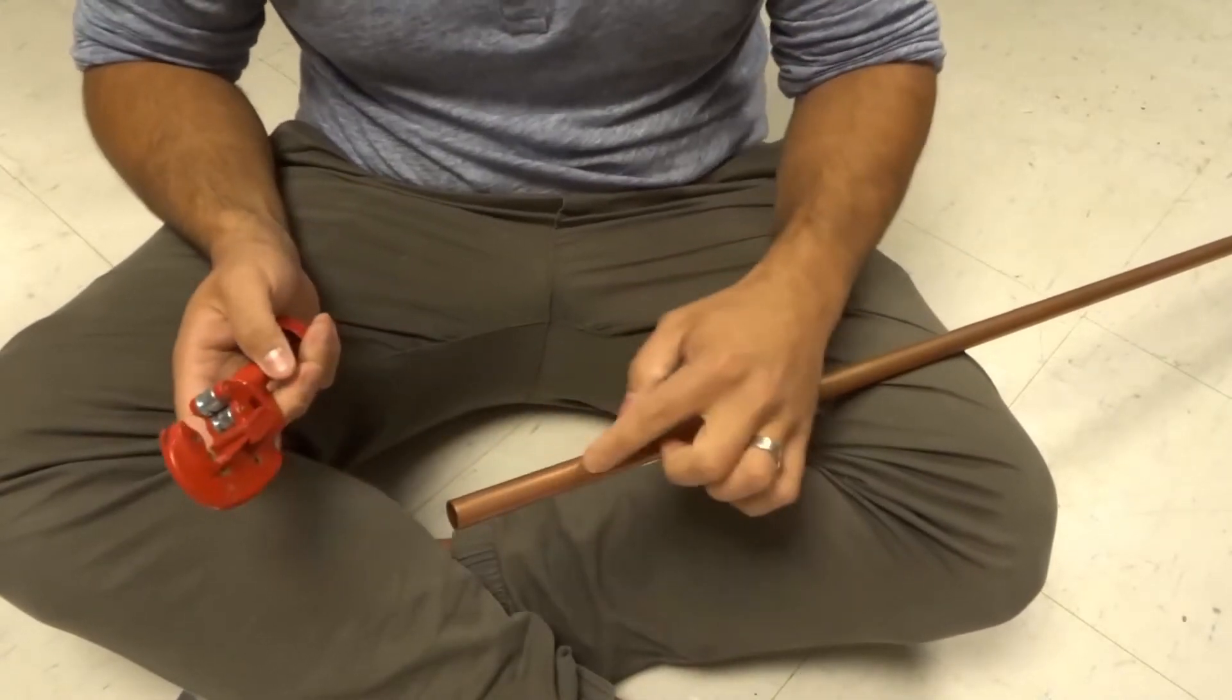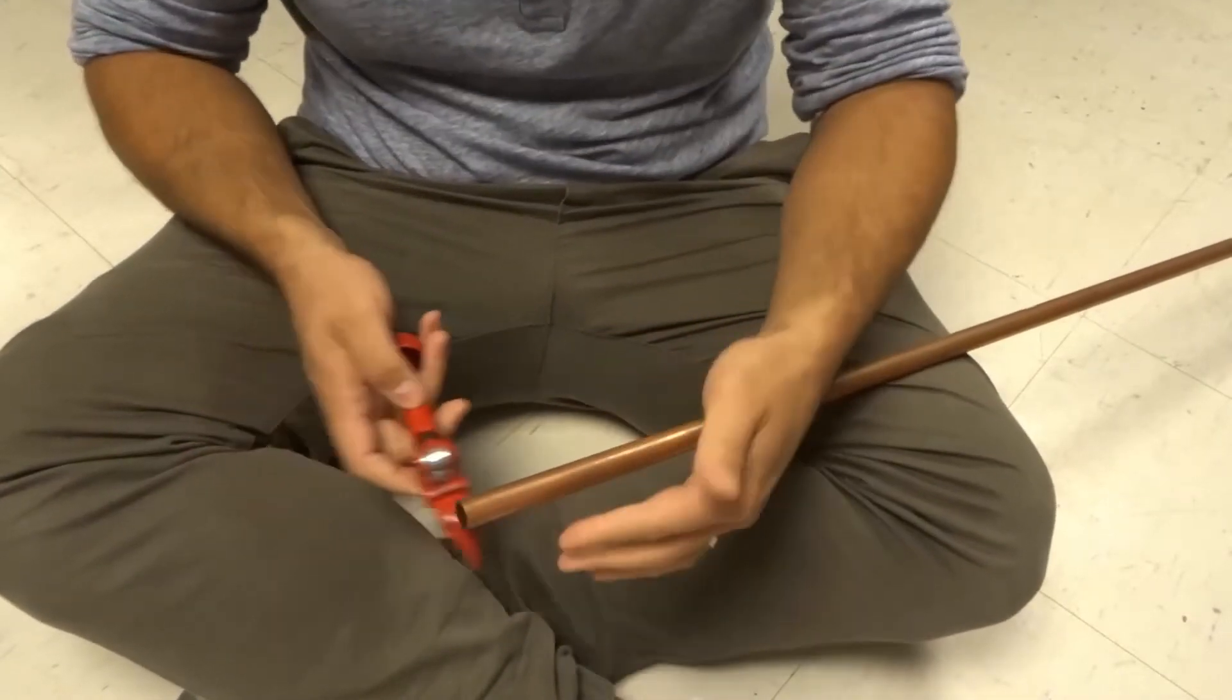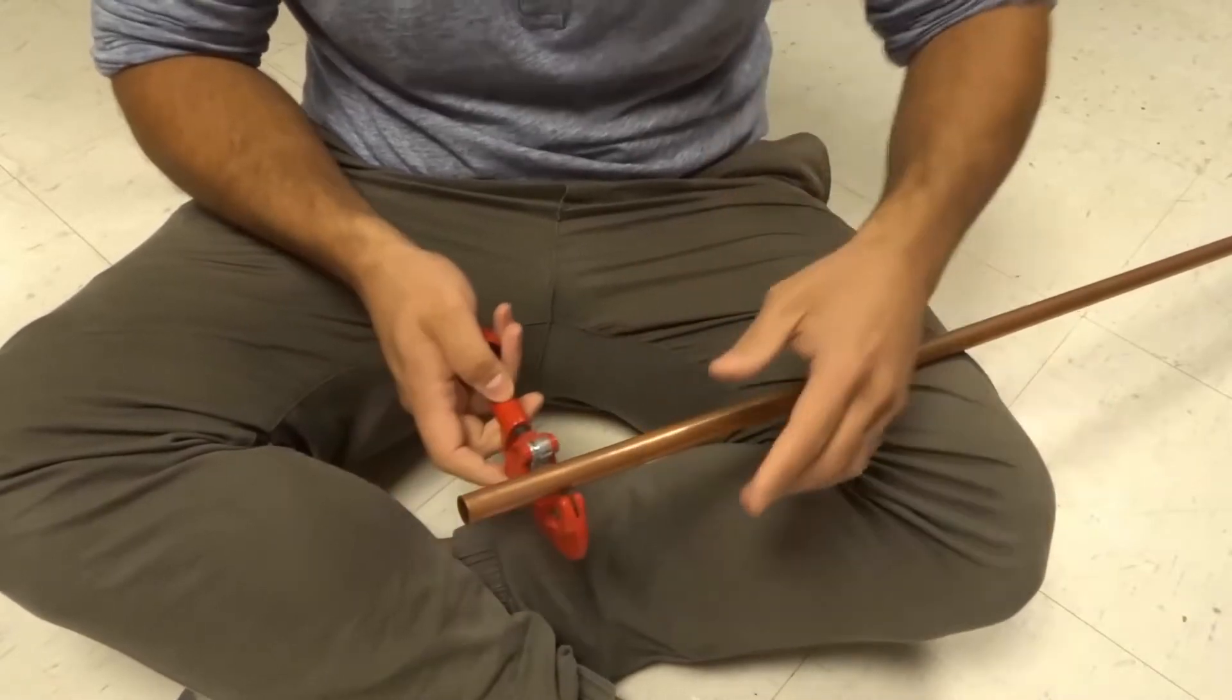What you want to do is figure out where you want to cut on the pipe. You can either make a mark on it or you can just eyeball it depending on what you're doing.